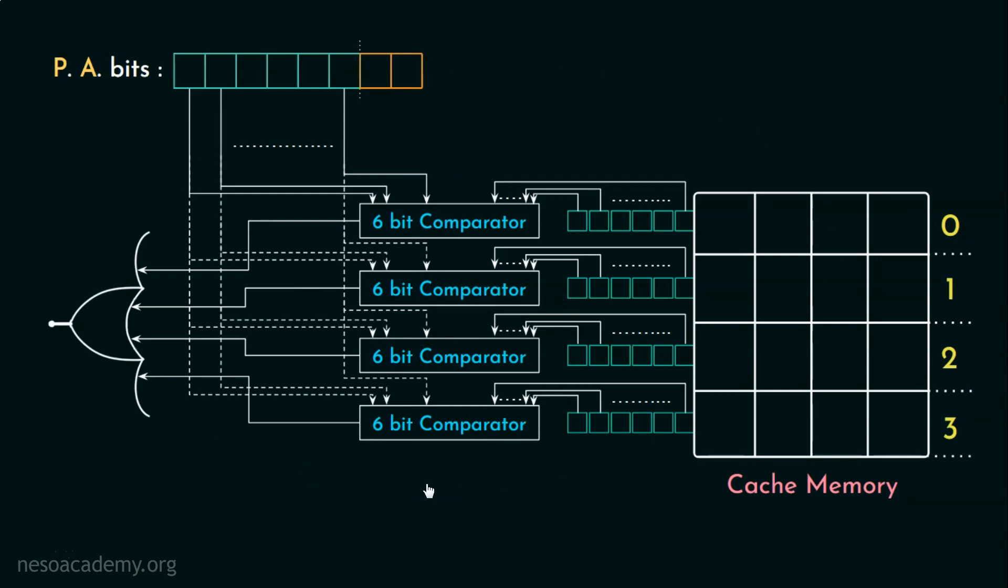So for this organization, the hit latency would be time taken by a single comparator as all of them are working in parallel that is T comparator plus the delay due to the OR gate signified by T OR. So this was the hardware implementation of associative mapping concept.